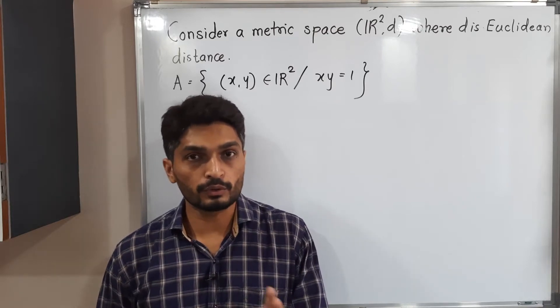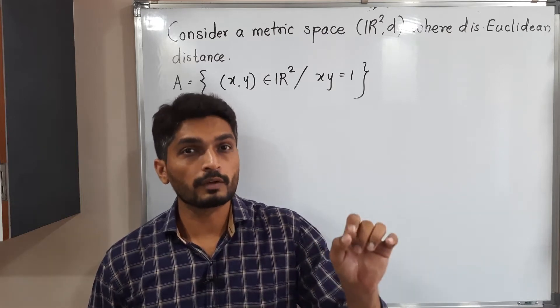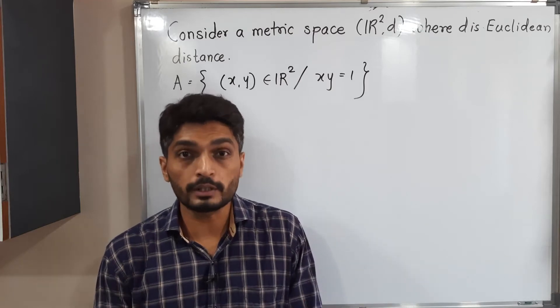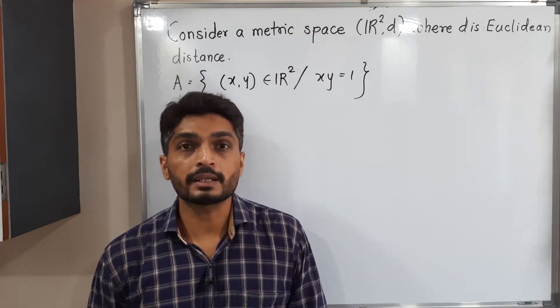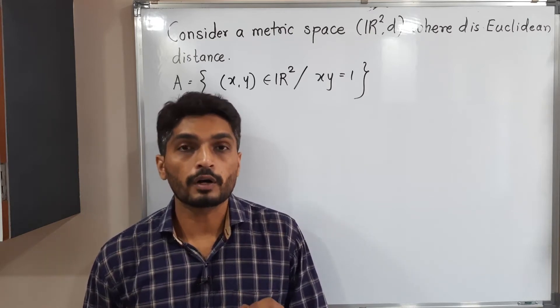I am sure you are familiar with that Euclidean distance. D of XY is equal to square root of (X₁ minus Y₁)² plus (X₂ minus Y₂)². So that Euclidean distance we have to follow.